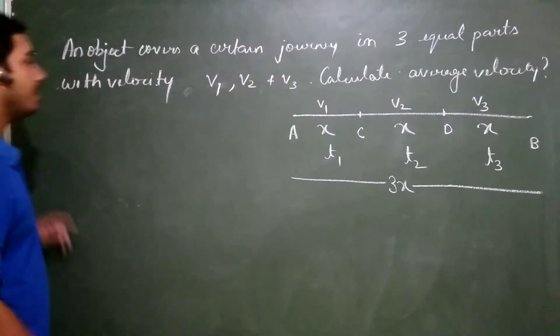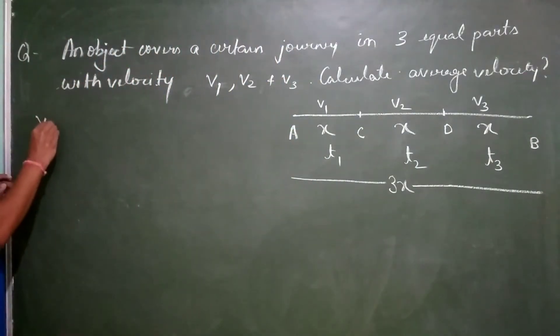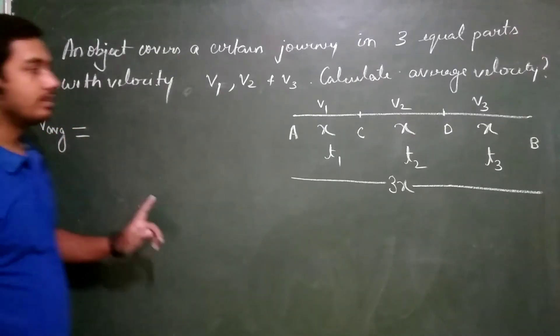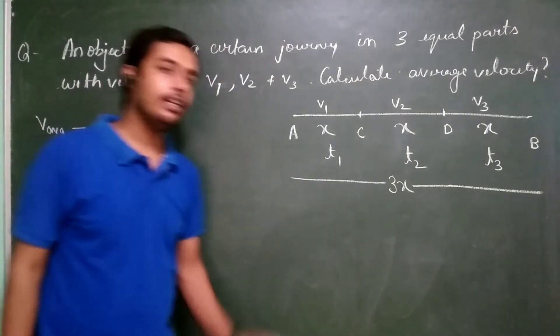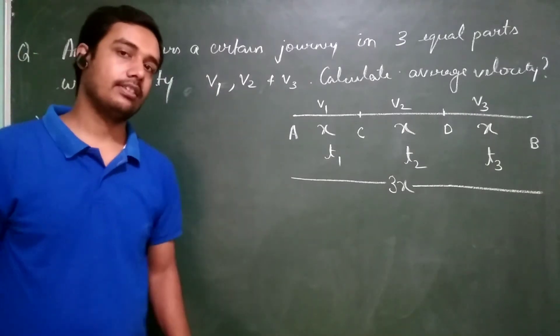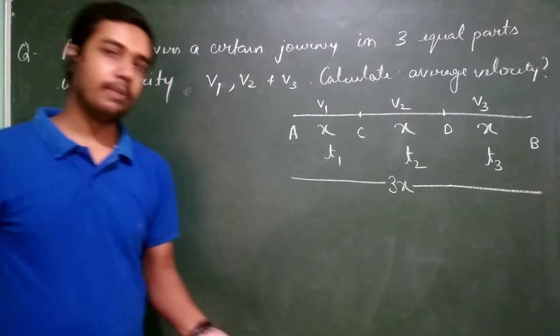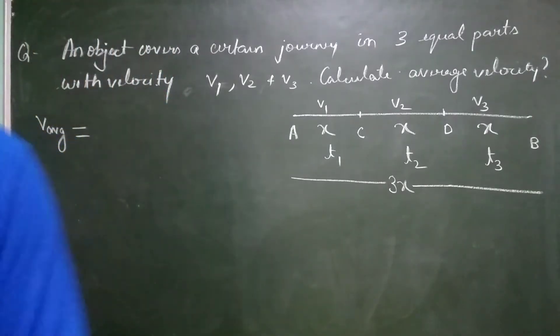Now you have to calculate the average velocity. Apply the formula total distance traveled upon total time taken and you will get the answer. I hope you will be able to do it and try it once.